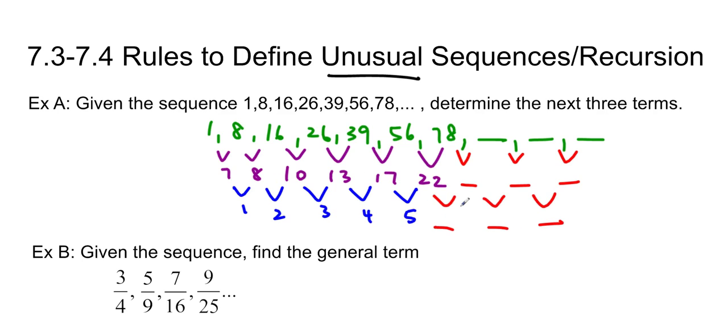I'm going to choose red. So 1, 2, 3, 4, 5, 6, 7, 8. To find this one, I'm going to do 22 plus 6, that's 28. 28 plus 7, 35. And 35 plus 8 gives me 43.